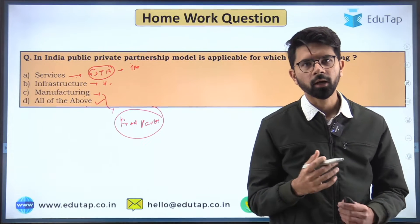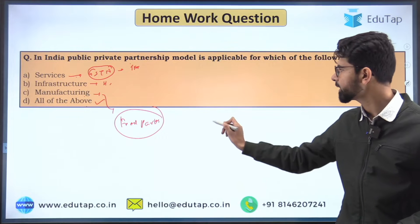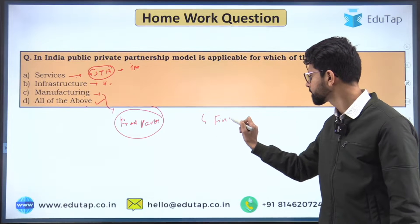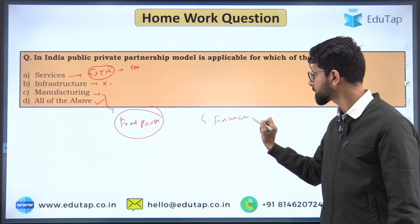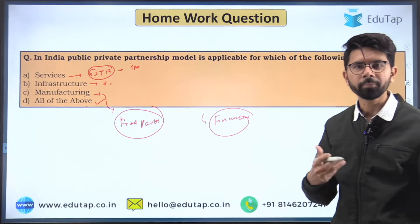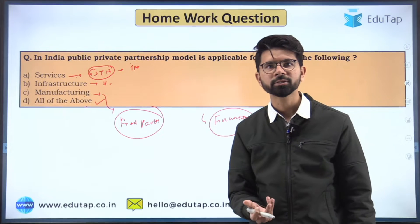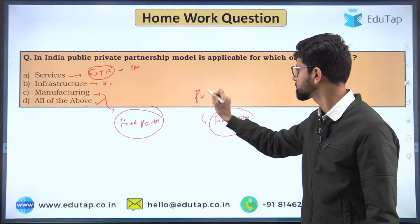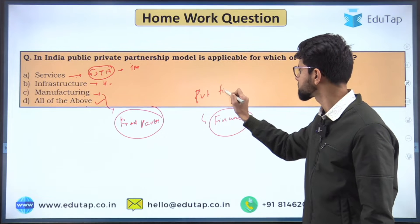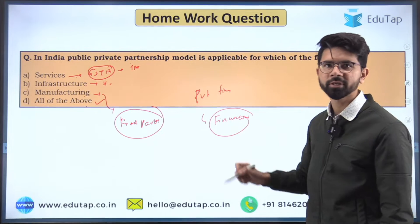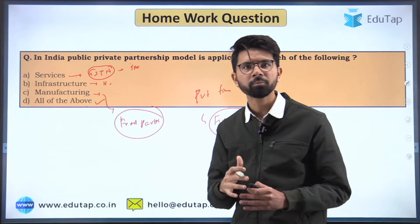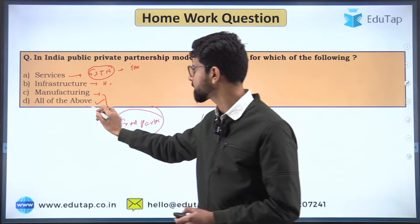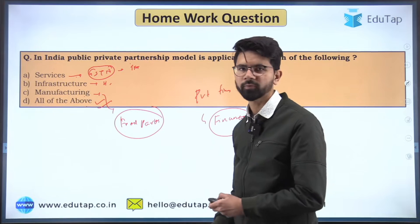Hence wherever the government is facing public financial constraint, it can capitalize on private sector finances and efficiency. The whole model is framed on capitalizing on the efficiency of the private sector. Hence the answer to this particular question is all of the above options.